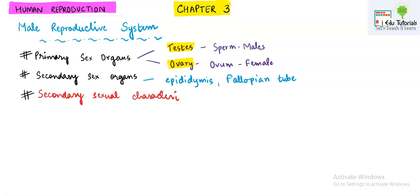Secondary sexual characteristics are those which are basically seen at the time of puberty, teenage, or adolescence — these are the body changes that happen in girls and boys when they enter puberty. In boys, pubic hair develops, the body becomes more muscular, and the voice becomes low-pitched. In females, the menstrual cycle starts, fat develops around the waist, and pubic hair develops. You must know at least two to three secondary sexual characteristics.